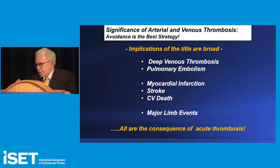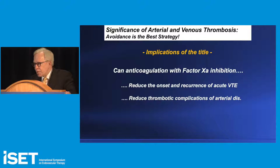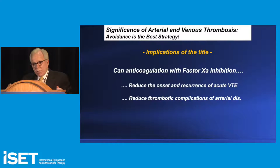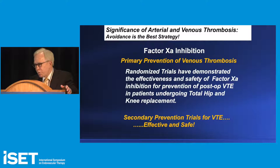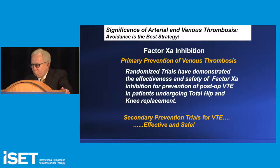As we focus on the topic, the real questions are: can anticoagulation with 10A inhibition reduce the onset and recurrence of acute venous thromboembolism? And can they reduce thrombotic complications of arterial disease? Those are the real questions. Time doesn't permit me to lay out all the details of primary prevention, but quite a few randomized trials have demonstrated the effectiveness and safety of 10A inhibition.